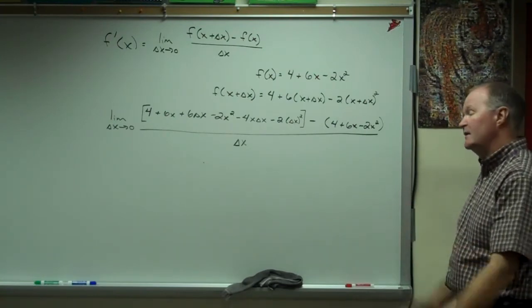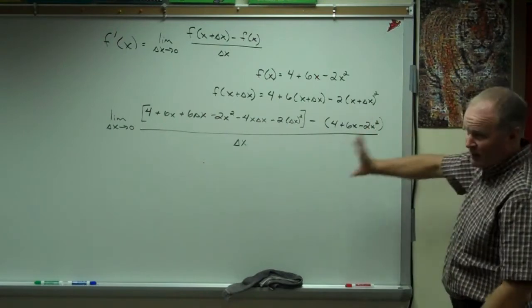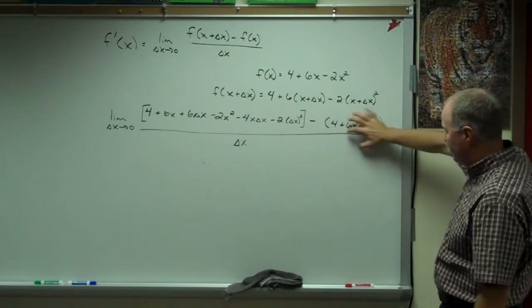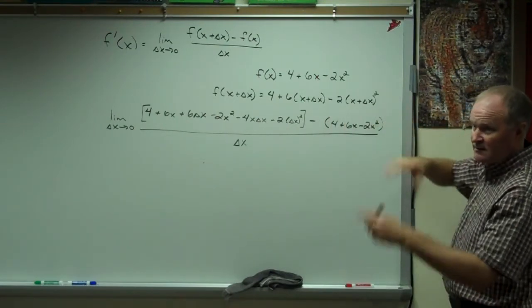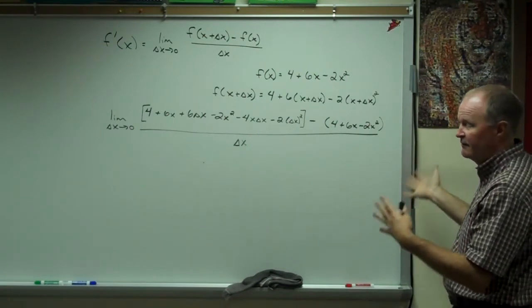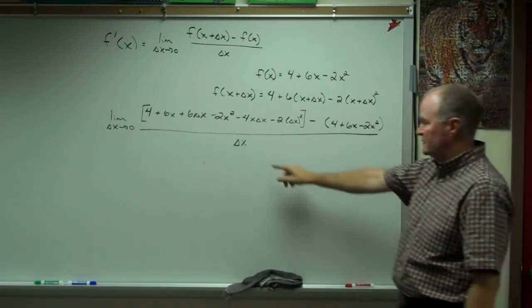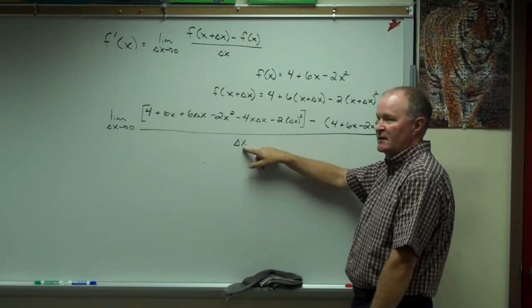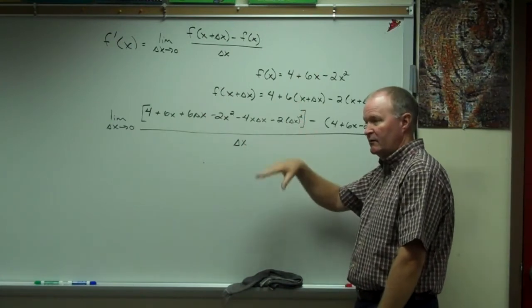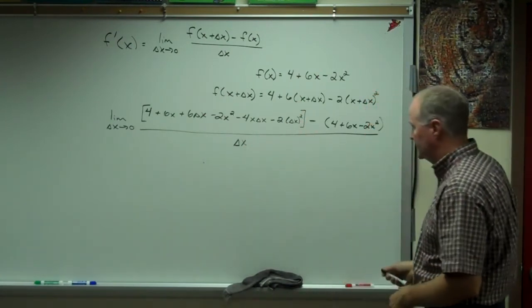And if you remember, the thing that really happens is, if you do everything right, all of the f of x stuff is going to get cancelled. It's going to subtract off. And what you have left, everybody should have a delta x in common. And you should be able to get rid of a delta x. Let's see what we got.